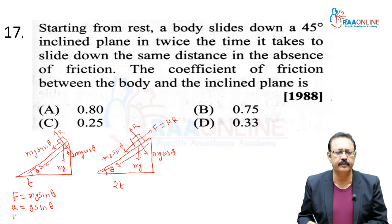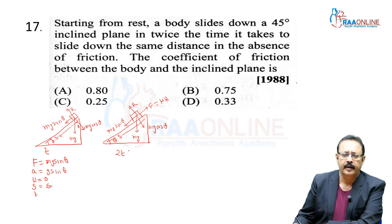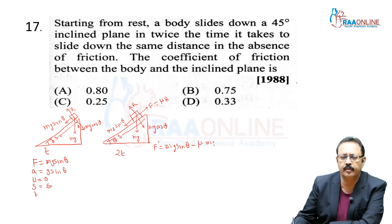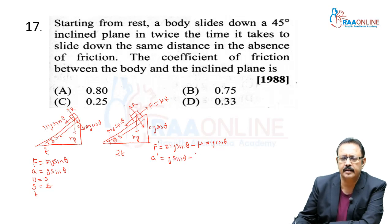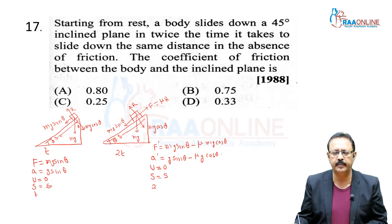Initial velocity u was 0, distance to travel is s, time taken is t. In the second case (rough), the driving force is mg sinθ minus friction R = mg cosθ, so acceleration is g sinθ − μg cosθ. u is also 0, distance is the same s, but time is 2t.